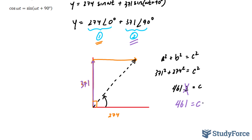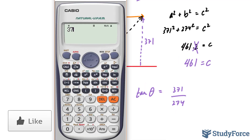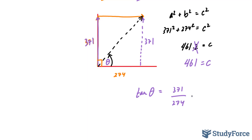Now we need to find the angle. We have 274 and 371 as our two sides. To find this angle theta, we use opposite over adjacent, which is tangent. Tangent theta equals 371 over 274. Taking the inverse tangent of 371 divided by 274 gives us 53.55. Rounding to three significant figures — since the digit to be removed is 5 and the preceding digit is odd — it goes up to 53.6 degrees.